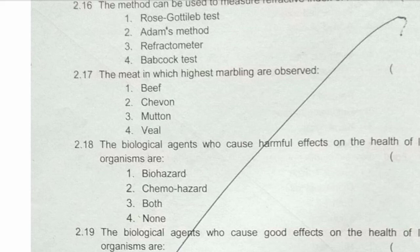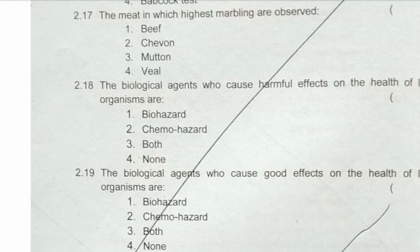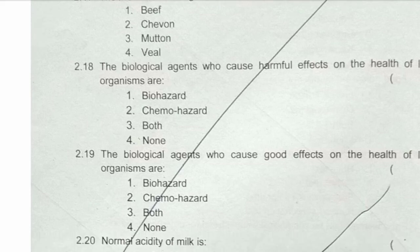Next question: biological agents which cause harmful effects on the health of living organisms are — the answer is biohazard. Biological agents harmful to other living organisms are called biohazards. If chemicals affect other organisms' health, they are called chemo hazards.